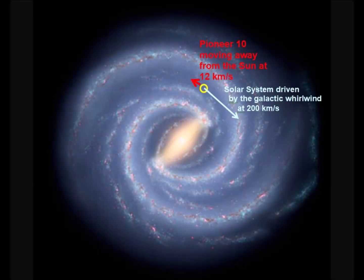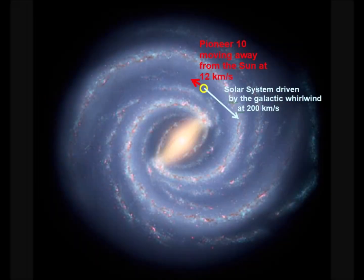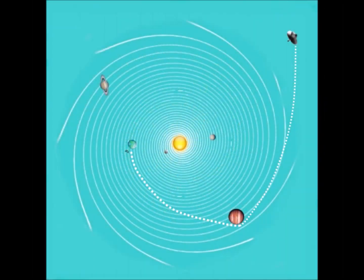The solar system is driven by the whirlpool of the galaxy. It therefore has no speed relative to the ether of this whirlpool. The sun itself has a whirlpool which carries the planets and satellites.